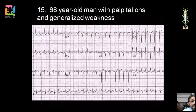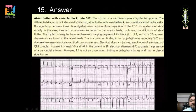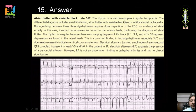Another ECG shows a narrow complex tachycardia with irregular RR intervals. P waves are present (ruling out atrial fibrillation) and morphologically similar (ruling out multifocal atrial tachycardia). The number of P waves before each QRS varies: sometimes three, sometimes four, sometimes two P waves precede each QRS. Variable block ratios are present, confirming atrial flutter with variable AV block.